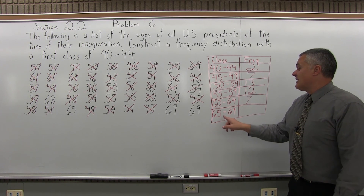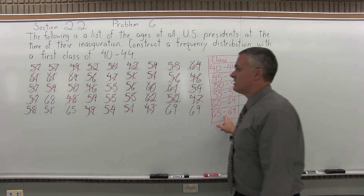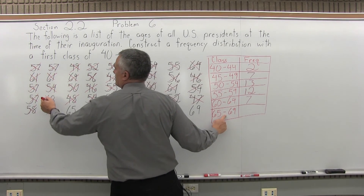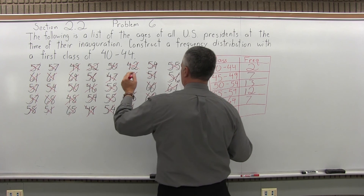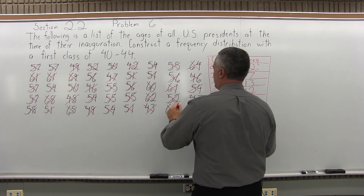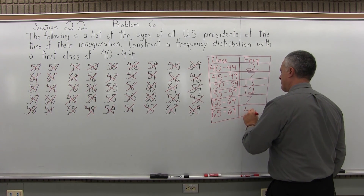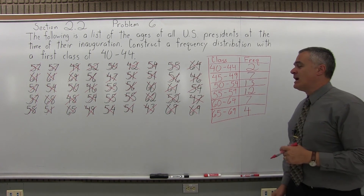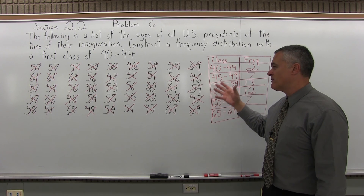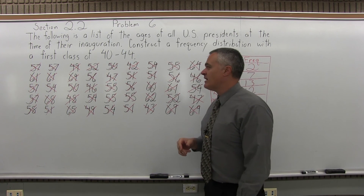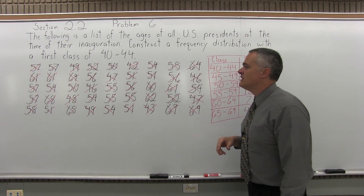The last class: presidents that were between 65 and 69 years old when inaugurated. Counting: one, two, three, four. And there are none left without an X, so four. Now just to check — there are 45 numbers in this list. You can count them off, know that we've had 45 presidents, or see that there are five rows of nine values: five times 9 is 45.